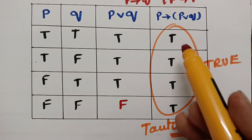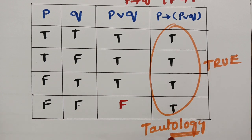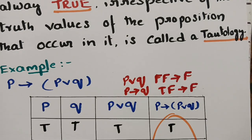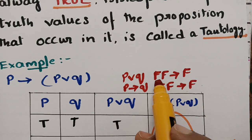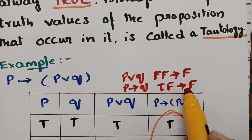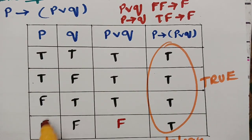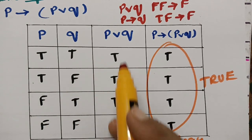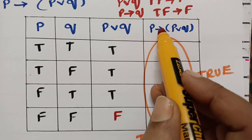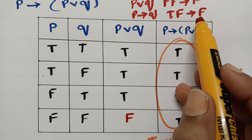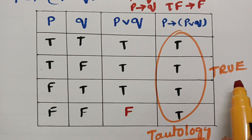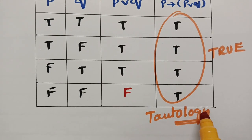Very clear — wherever we get all truths in the last column, that proposition is called a tautology. Remember this example. For OR (disjunction): false-false gives false, the rest are true. For implication: true-false gives false. Since there is no true-false combination here, everything is true. If the compound proposition is always true, we say that proposition is a tautology.